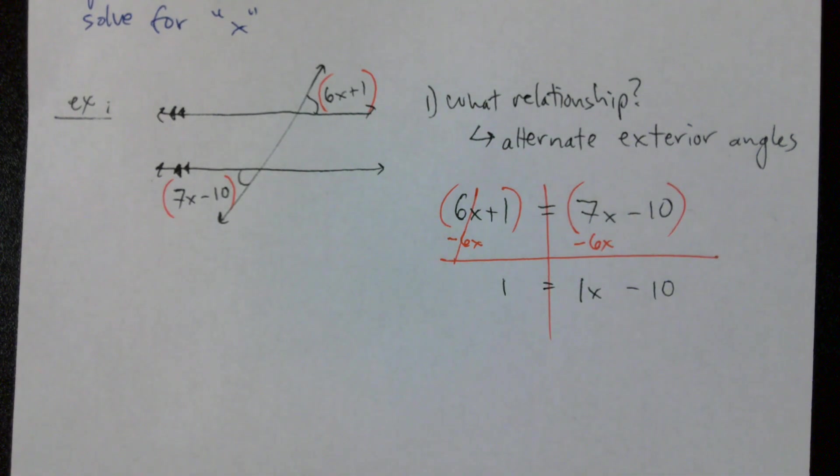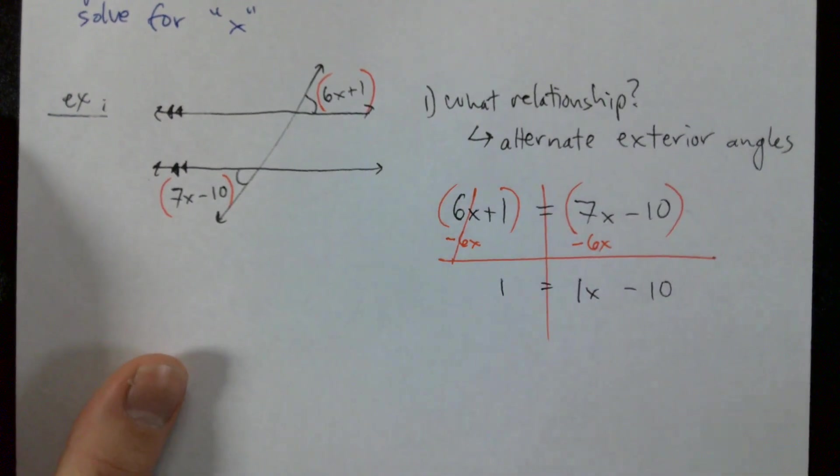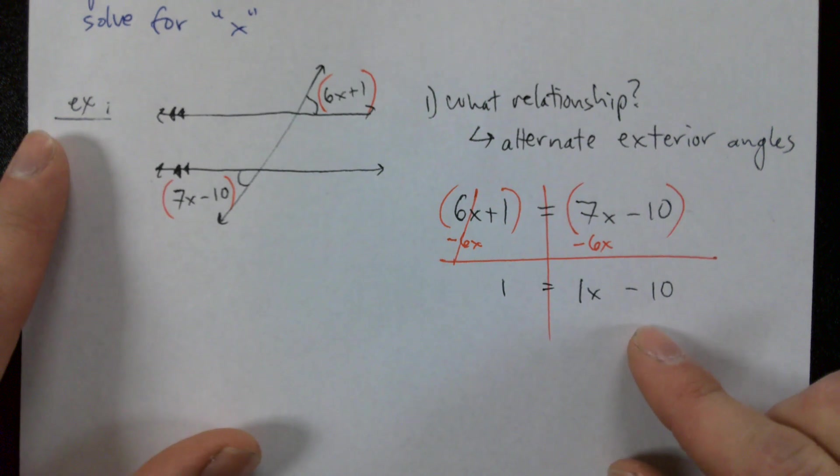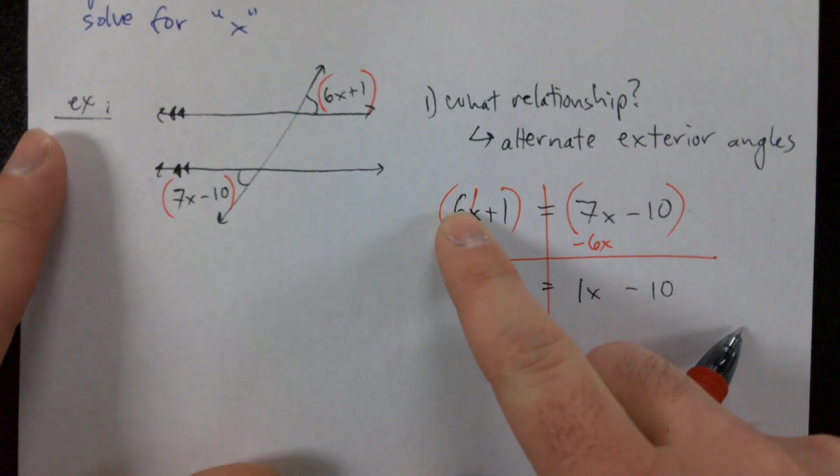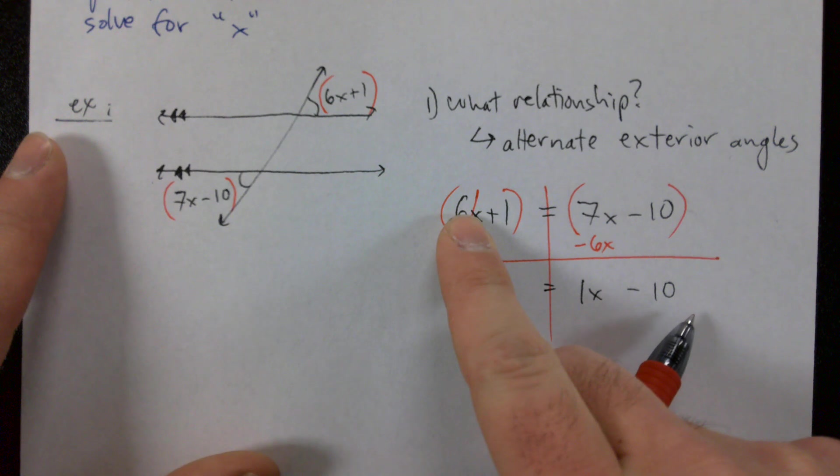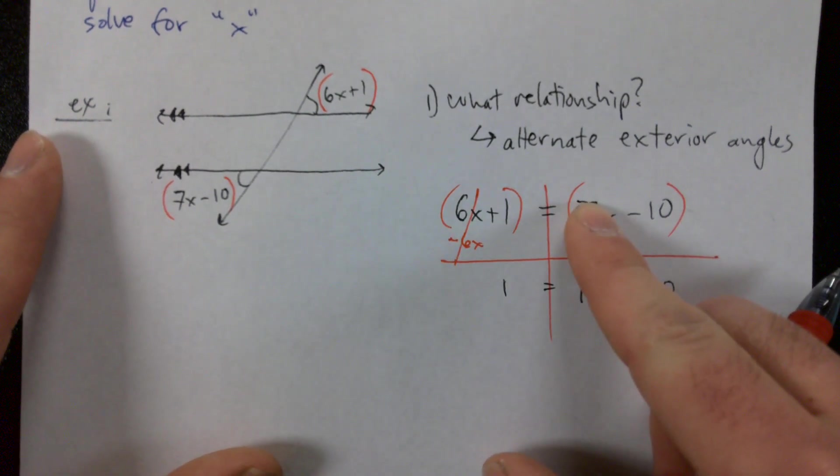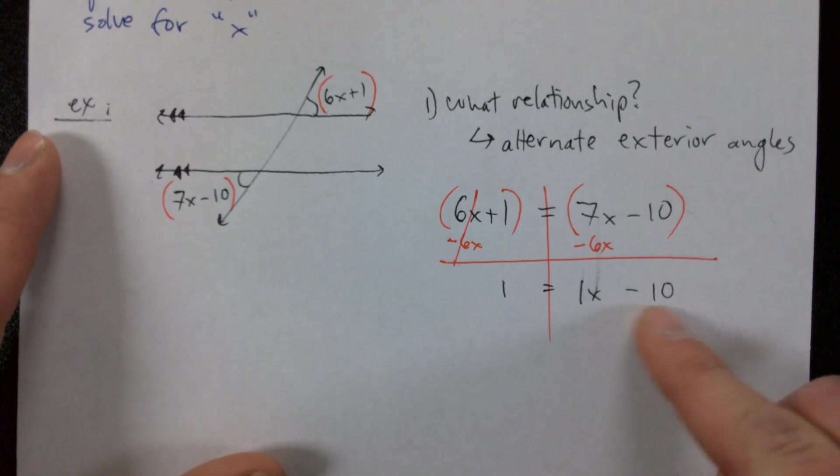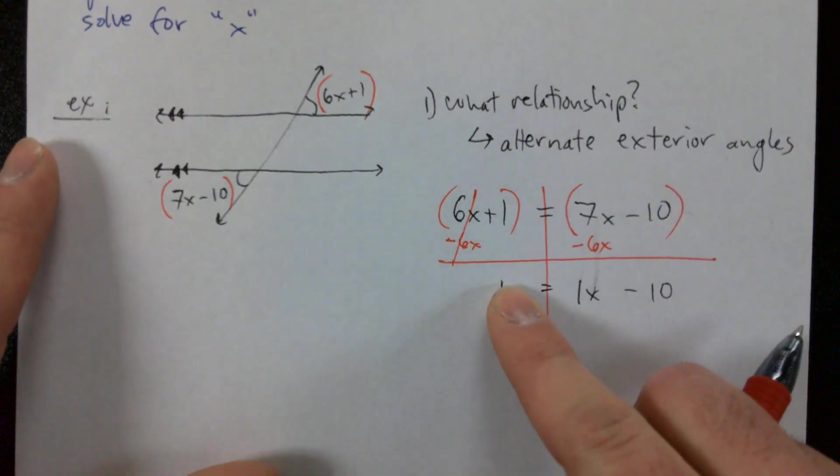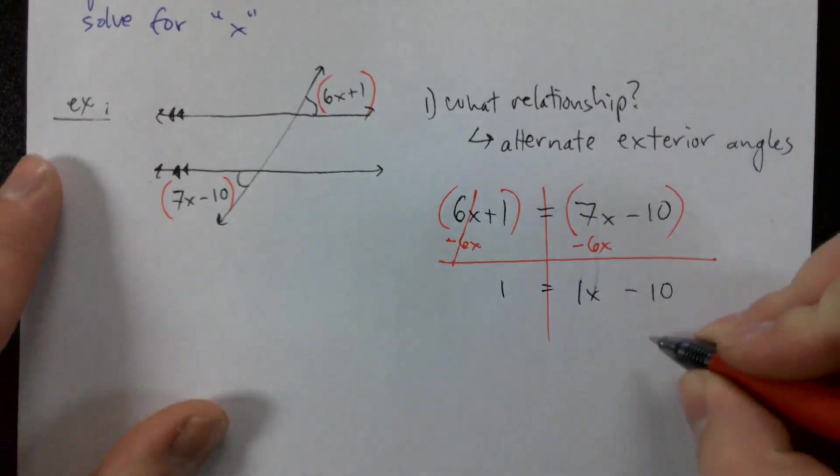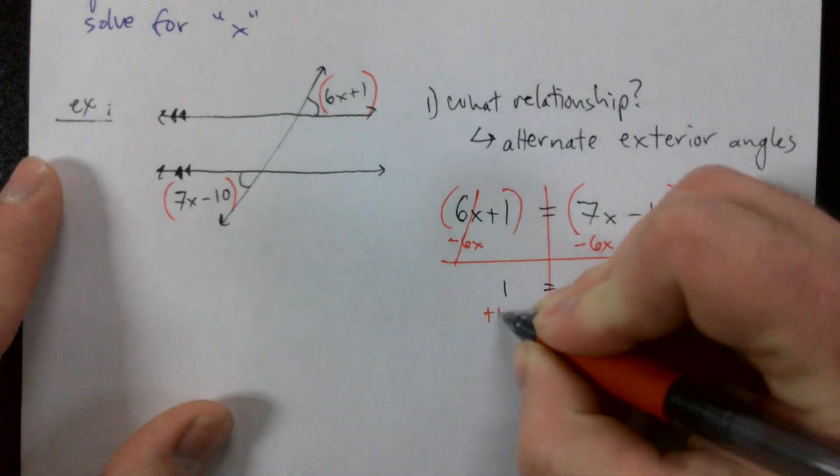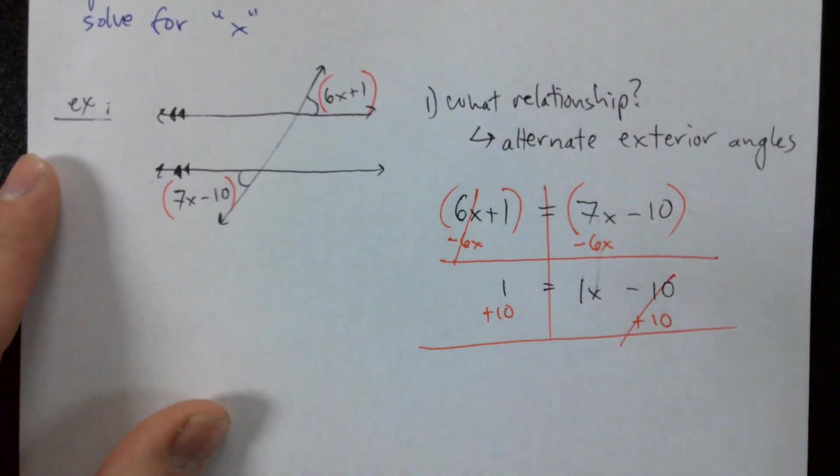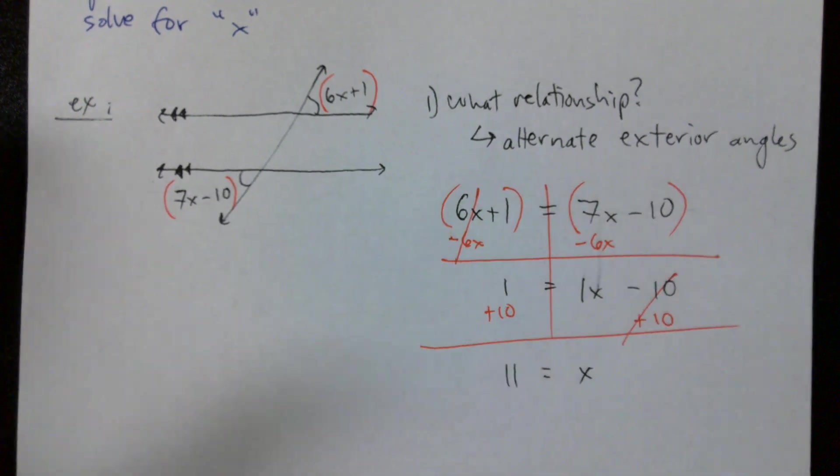So we brought our variable term over to the right. What are we going to bring over to the left? This variable term got brought over to the right, so now we're going to take this constant term, negative 10, and bring it over to the left. What's the inverse of negative 10? Positive 10. And 1 plus 10 leaves us with 11 equals x.